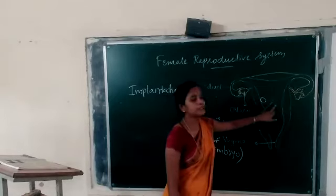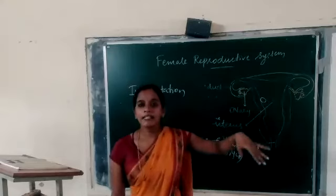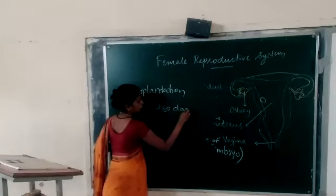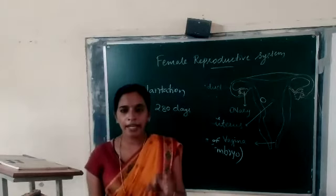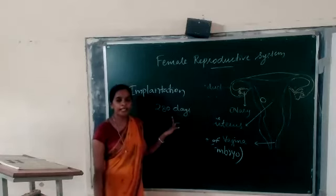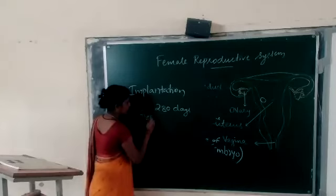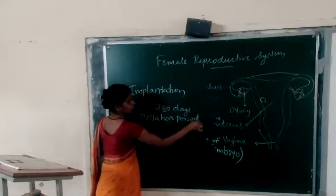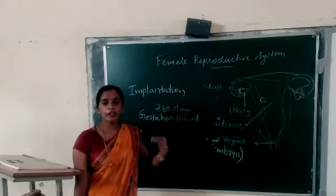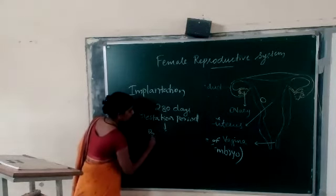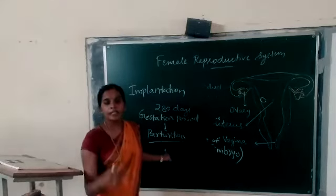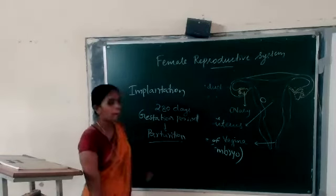The attachment of the embryo to the wall of the uterus is called implantation. The embryo then develops into a baby. It takes about 280 days for the proper growth and development of a fetus. This period of growth and development of the child or fetus is called the gestation period. After the gestation period, the mother gives birth to the child — the process of giving birth to a baby is called parturition.